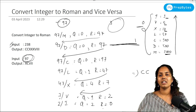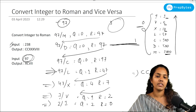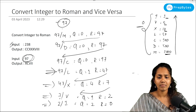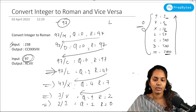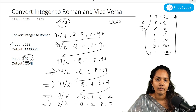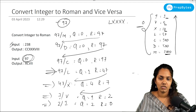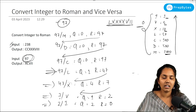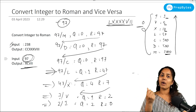Now considering those non-zero quotients: I have L (quotient 1), 4 X's, 1 V, and 2 I's, which would naively give LXXXXVII. But this is not the correct output. The actual correct Roman numeral for 97 is XCVII. So there's an exception case we need to handle.